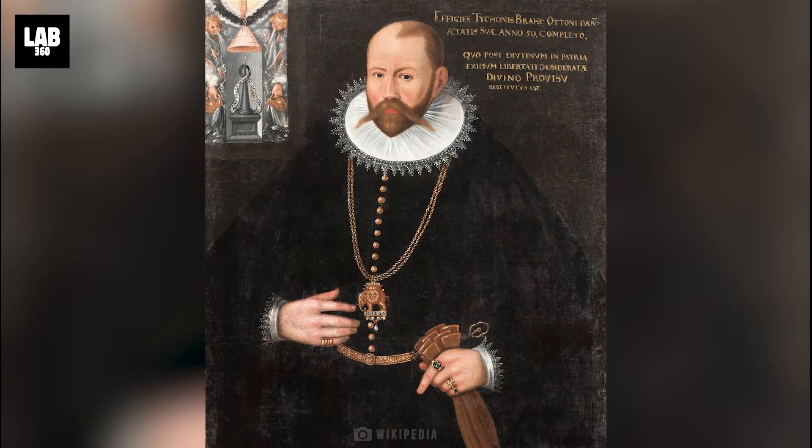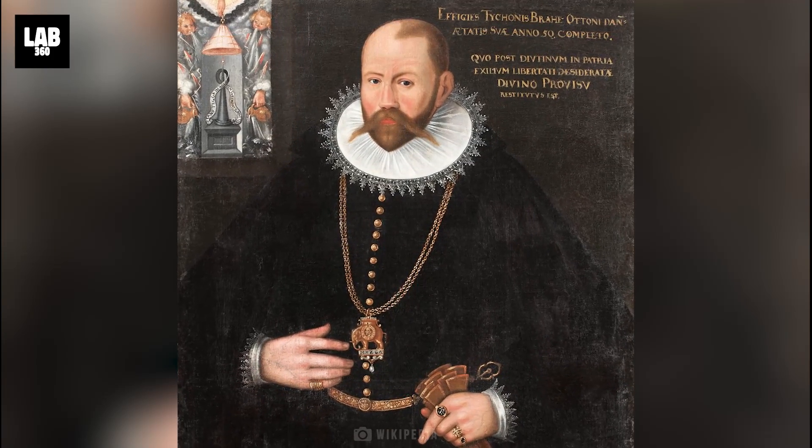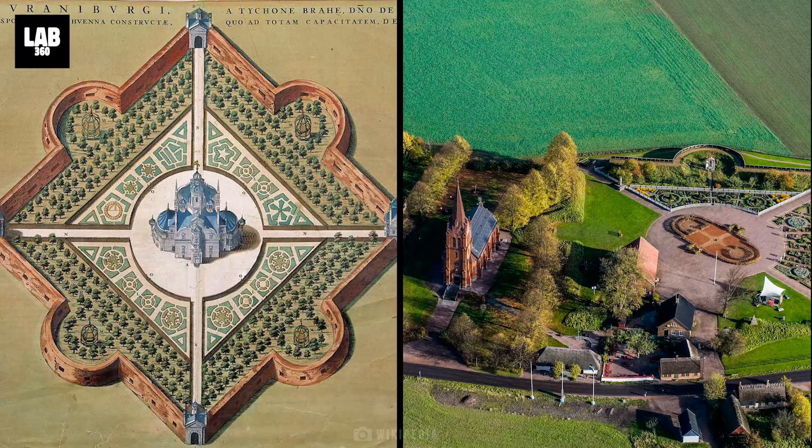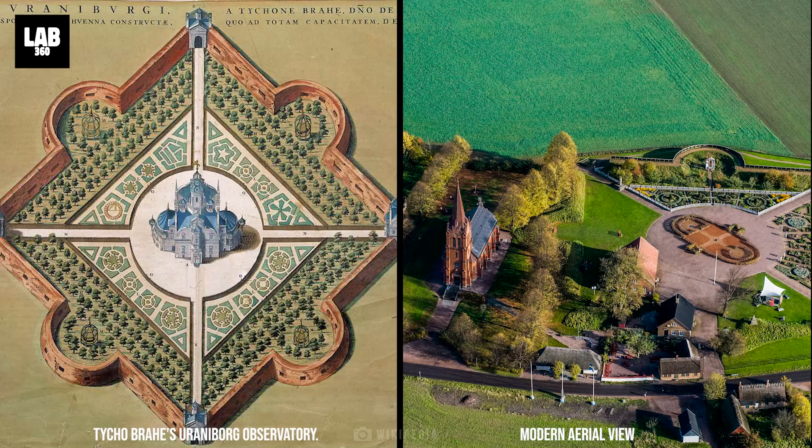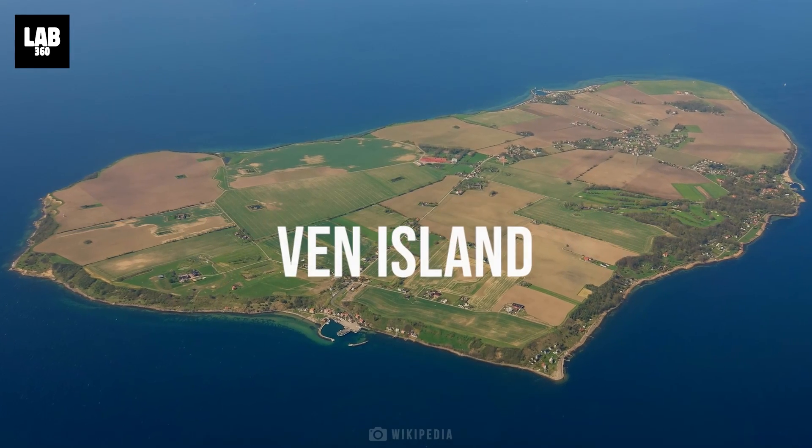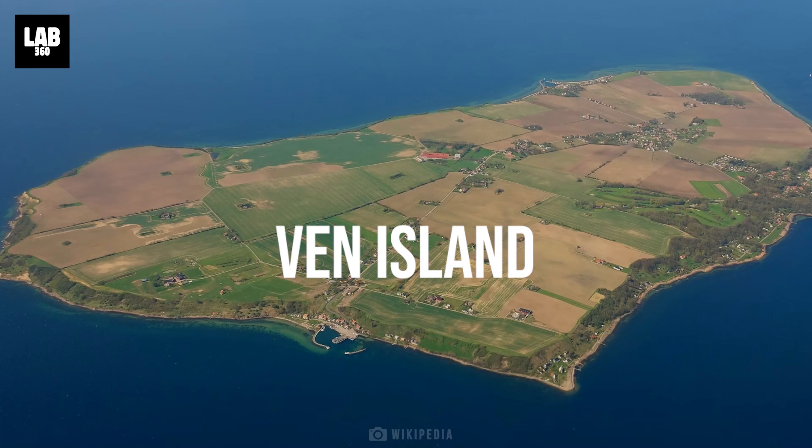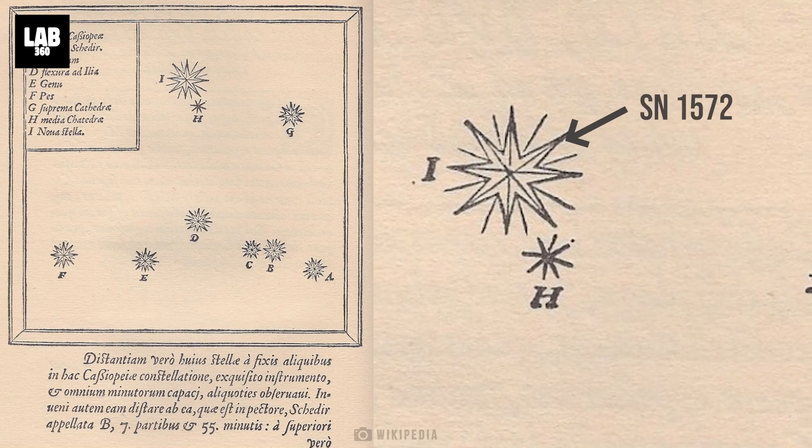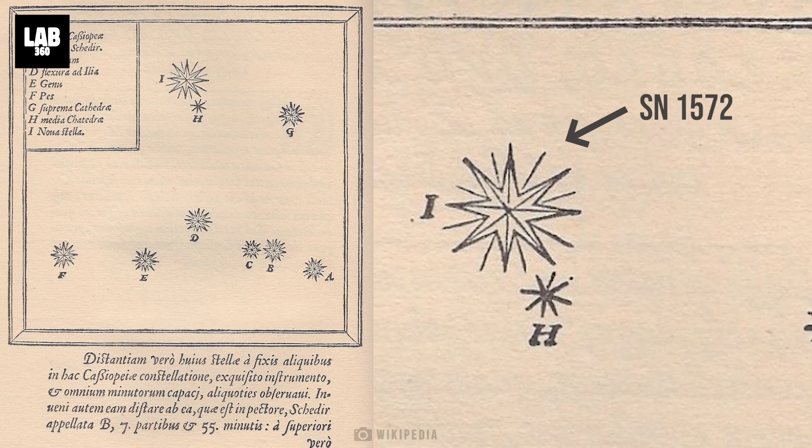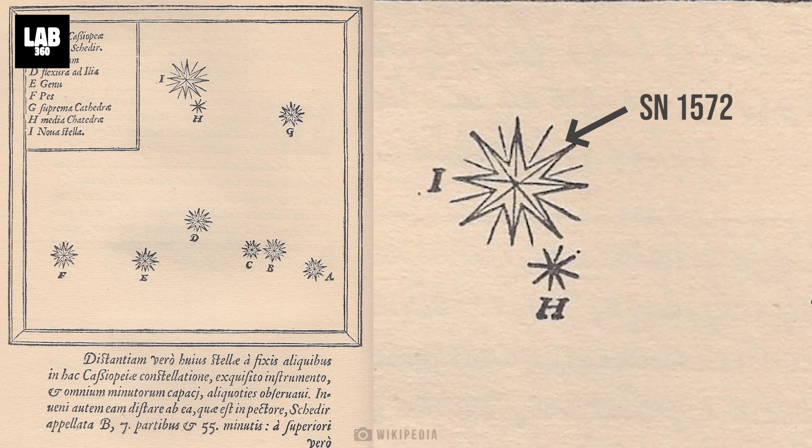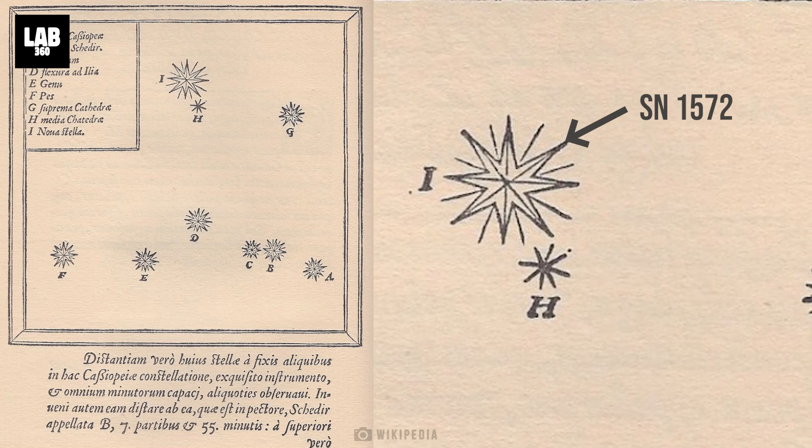Back in the 1500s, the Danish astronomer Tycho Brahe was known for his meticulous observations of the night sky from his observatory on the island of Venn, now a Swedish island. In 1572 AD, he noted the appearance of a new star in the sky, which we now know as supernova SN 1572.